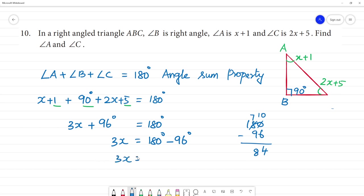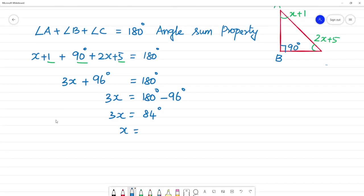3x equal to 84 degree. So x equal to 84 by 3. Cancel by 3. 2, 3 is 6. Remainder times 3 is 24.